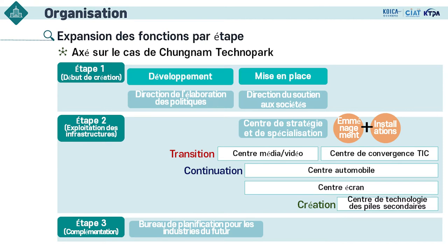Ces cellules sont organisées en première étape de la création du parc. En deuxième étape, sur le plan de l'expansion des infrastructures matérielles, les centres de stratégie et de spécialisation sont établis. Ces centres se trouvent dans l'ensemble de Chungnam en tant que postes avancés pour le soutien des entreprises. Mais ils connaissent des changements — ils se transforment, continuent à mener des projets ou de nouveaux sont créés.